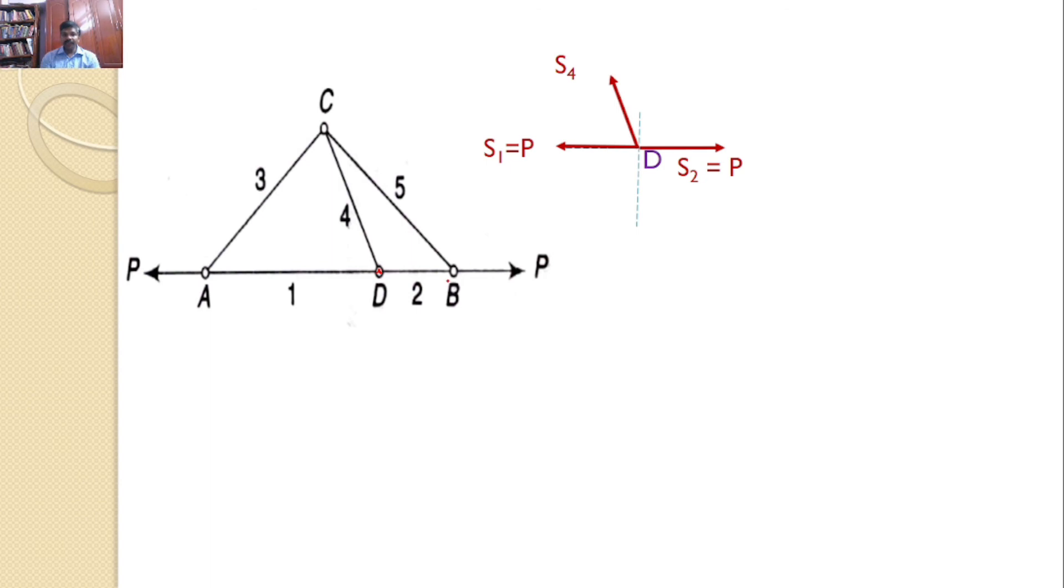I am transferring onto a separate XY plane. Let us assume that S4 makes an angle alpha with the horizontal. We know that S1 equals P and S2 equals P. Our interest is to find S4. So you can resolve the force S4 along the horizontal component, that is S4 cos alpha, and the vertical component S4 sin alpha. By using sigma Fy equals 0, we can say S4 equals 0.